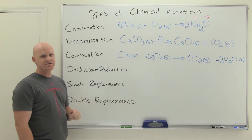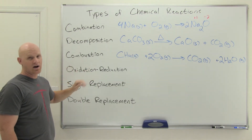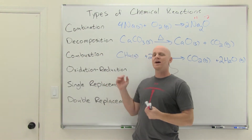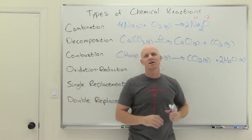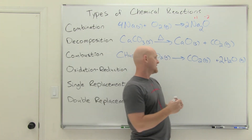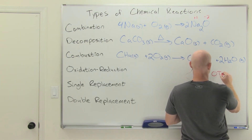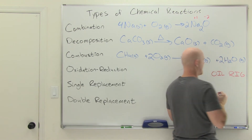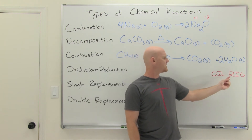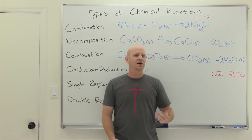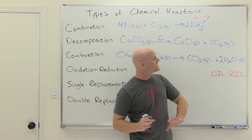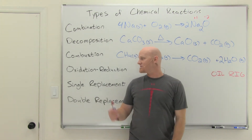Now, oxidation-reduction reactions — technically a combustion reaction is a type of oxidation-reduction reaction, but redox is a broader class. What happens in an oxidation-reduction reaction is that electrons are transferred from one species to another — it's an electron transfer reaction. We use the mnemonic OIL RIG: Oxidation Is Loss of electrons, Reduction Is Gain of electrons. The one who loses electrons is being oxidized, and the one that gains electrons is being reduced.